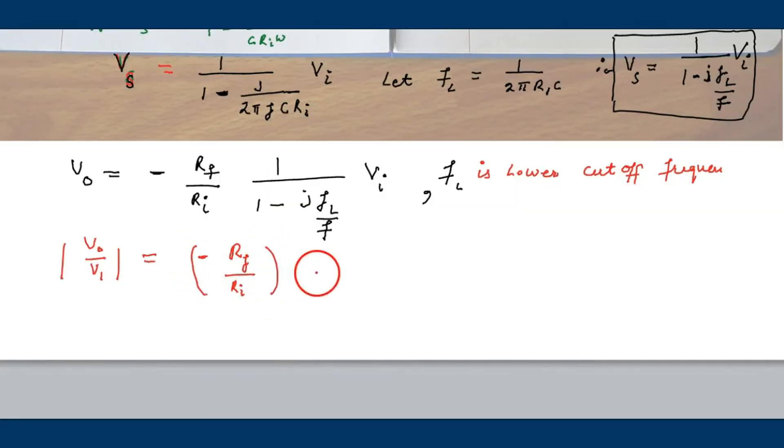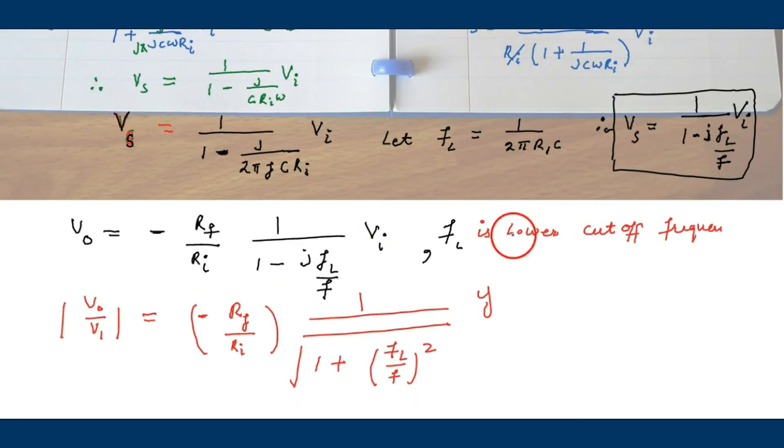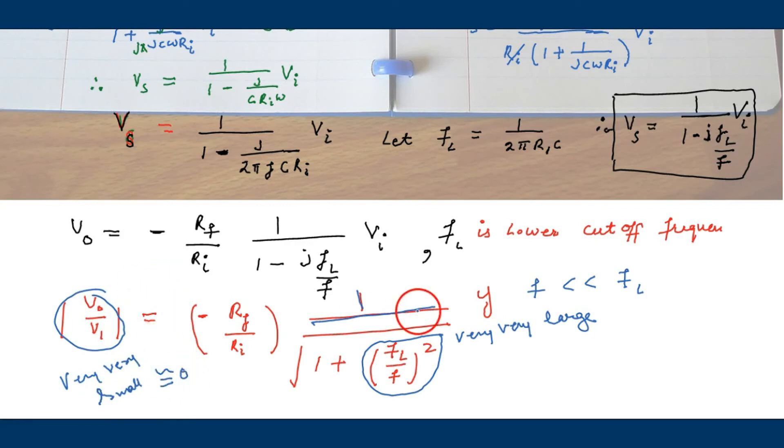The magnitude of the gain becomes minus RF into RI into 1 upon the root of this whole square. Now if f is less than fl, then fl upon f becomes very large. One upon large quantity is very small. So below the cutoff frequency, the gain is approximately zero.